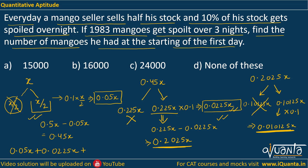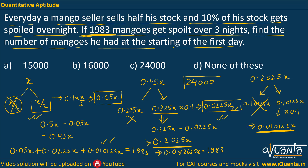Adding all the spoiled mangoes: 0.05X plus 0.0225X plus 0.010125X equals the total number of mangoes spoiled, which was given as 1983. If we add the left-hand side we get 0.082625X equal to 1983. Solving for X gives us 24,000. So option C is the correct answer.